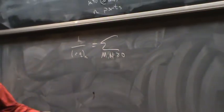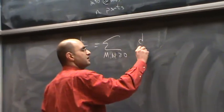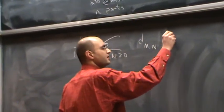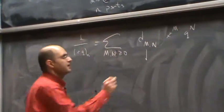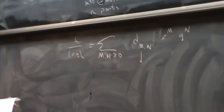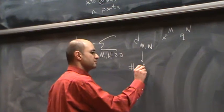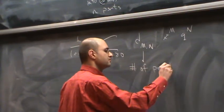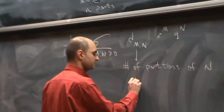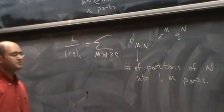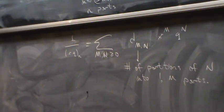Because we have one more parameter. Capital M and capital N greater than 0. d sub m and n, x to m, q to n. Now this coefficient, again, counts number of partitions of big N into exactly m parts. And the exponent of x counts the number of parts.